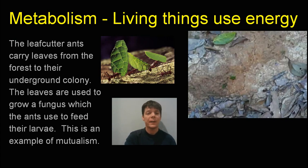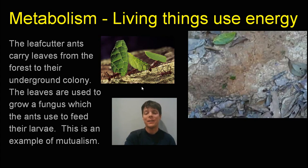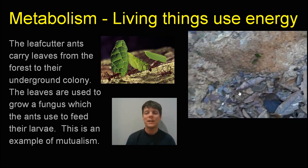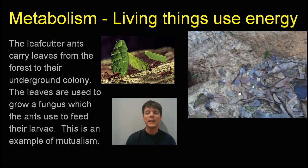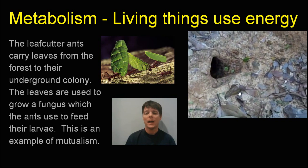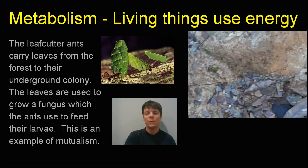Another important characteristic of living things is that they use energy — they have metabolism. The example I'm highlighting is the leafcutter ant. What leafcutter ants do is carry leaves from the forest to their underground colonies. The leaves are not actually what the ants eat — they use the leaves to grow a fungus, and the fungus is what they feed to their larvae. The relationship between the ants and the fungus is an example of mutualism because both species are being benefited. This video is from the Caribbean, and they are nocturnal ants.